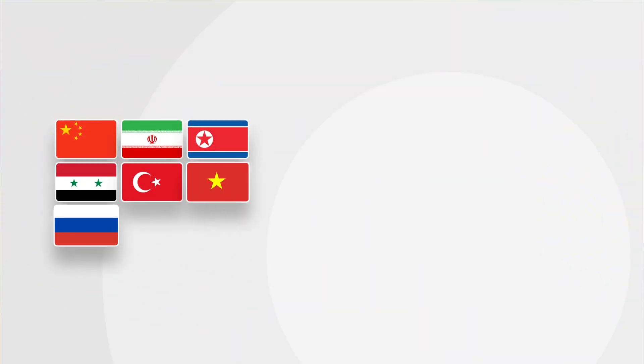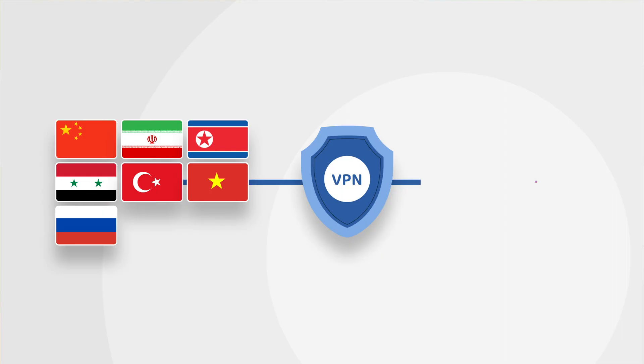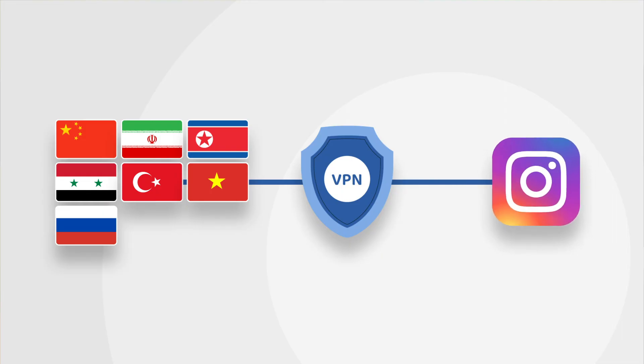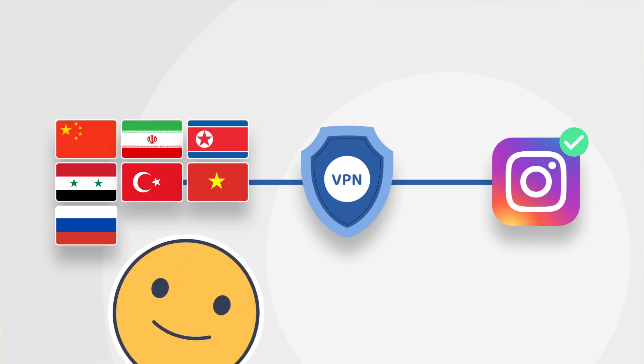To summarize: if Instagram is banning your country or organization, you can use a VPN. Instagram restrictions are easy to bypass with one of those. The process is simple, and even if you run into problems, they can be fixed. Nowadays you need as many sources of information as you can get, so don't hesitate to use a VPN to access Instagram.